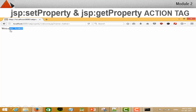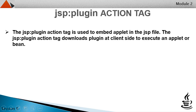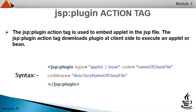Now let's see the JSP plugin action tag. The JSP plugin action tag is used to embed an applet in the JSP file. It downloads a plugin at the client's side to execute an applet or bean. See the syntax — it depends on the browser whether it supports the plugin or not. Hope you enjoyed this session.